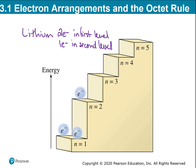As we continue across this row, you'll increase the number of electrons in the second energy level: two with beryllium, three with boron, four with carbon, five with nitrogen, six with oxygen, seven with fluorine. When we get all the way over to neon, we have eight — and eight is the maximum number that fits in the second energy level. So neon has two electrons in the first energy level and eight in the second, creating that stable electron configuration.